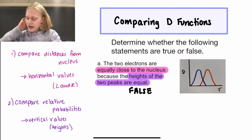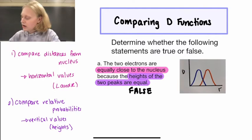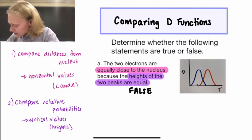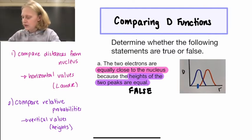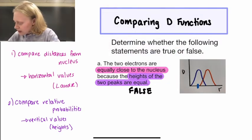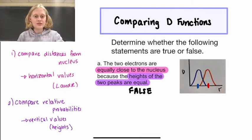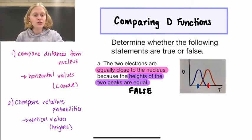If we actually look at it, we can see our blue value has an average value there, and our red function has an average value out here. So actually, our red function is farther away from the nucleus than our blue function.